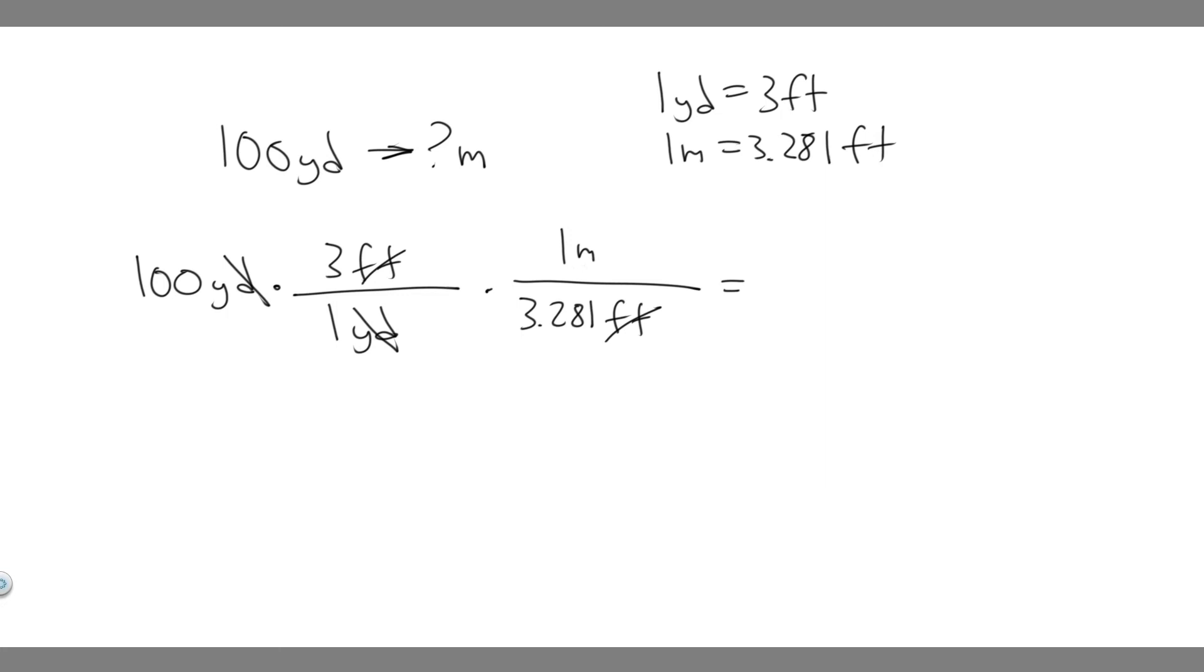Now that you have it like that, all you have to do is multiply across. You're going to do 100 times 3, then times 1 over 3.28, or just divide by 3.28.